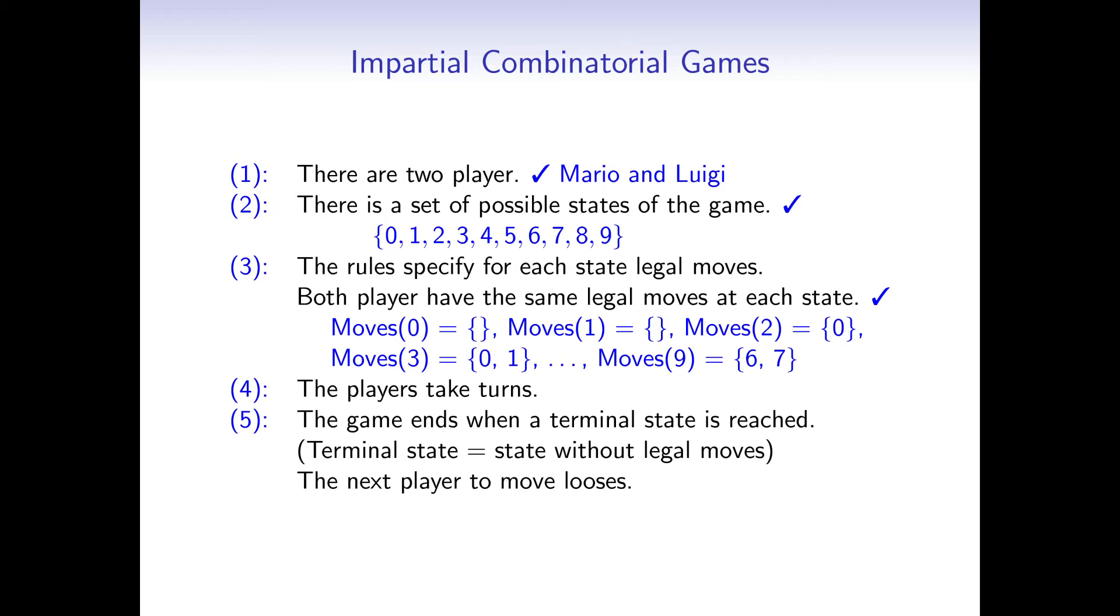The pile of height 0 has no moves. So does the pile of height 1. But the pile of height 2 has 1 move. We move 2 blocks. Or change the height to height 0. The pile of height 3 has 2 possible moves. To change the pile into a pile of height 0 or of height 1, and so on.